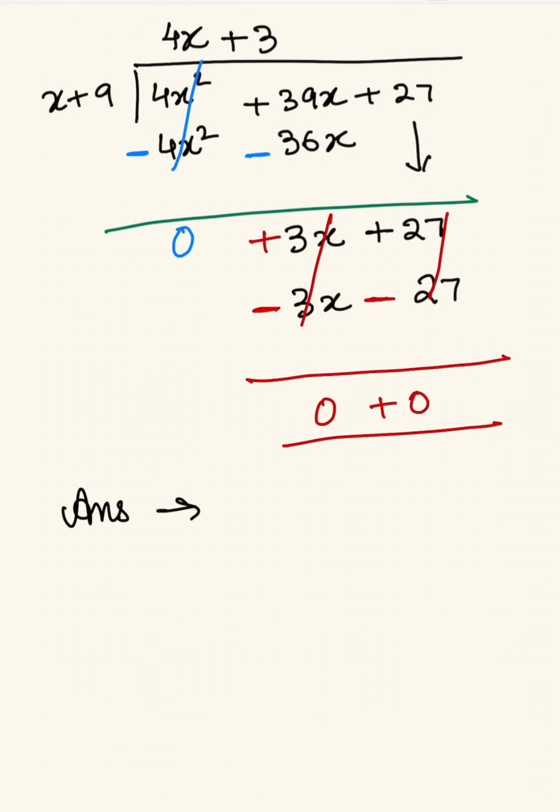When we write the answer to polynomial division, it is written as quotient plus remainder over divisor. Now again, in this case the remainder is just 0, so we don't really have to write it down. We can just go ahead and write down the quotient, which is 4x plus 3. Box it up, and we are done.